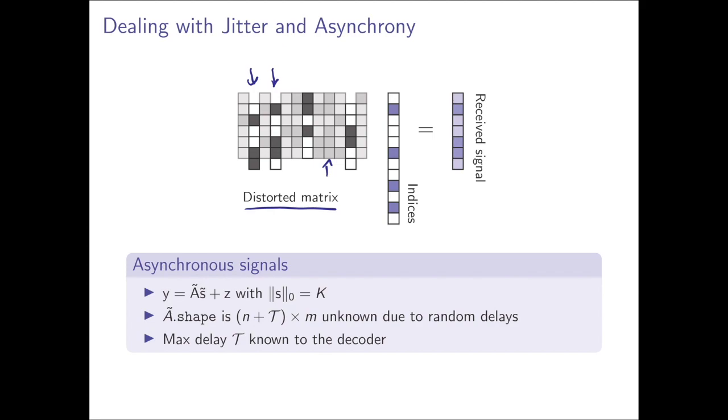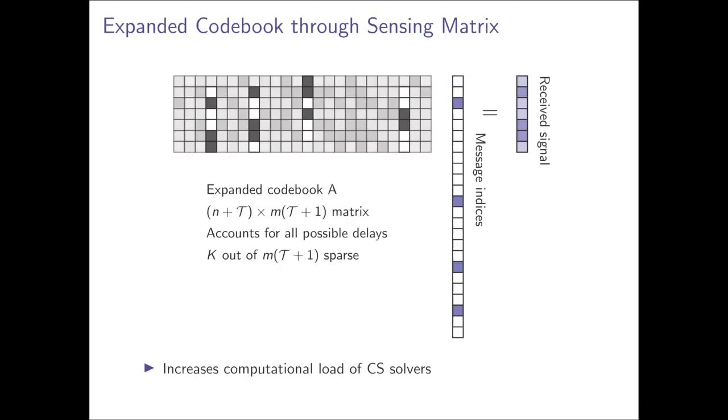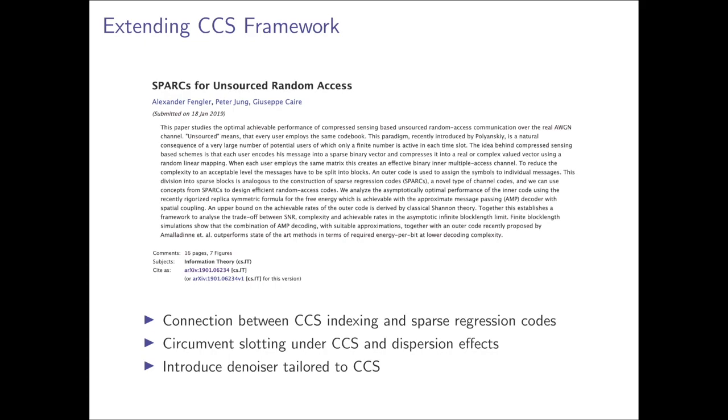The enlarged matrix then looks like this, where the width of the matrix accounts for the number of delay profiles. This is still a compressed sensing problem, albeit one with a wider A that may be slightly more complex, but it can handle the jitter.